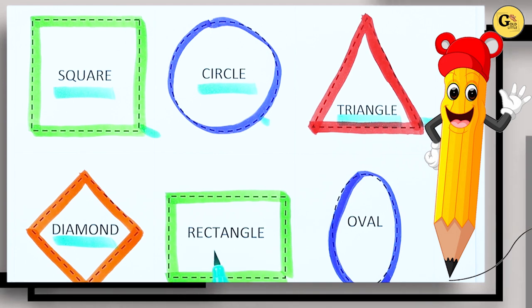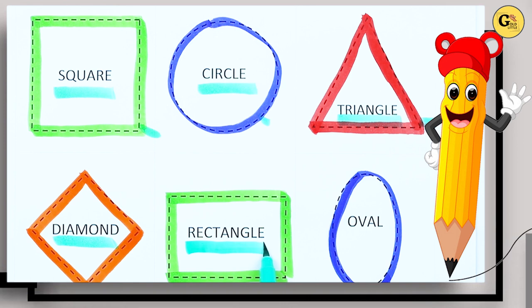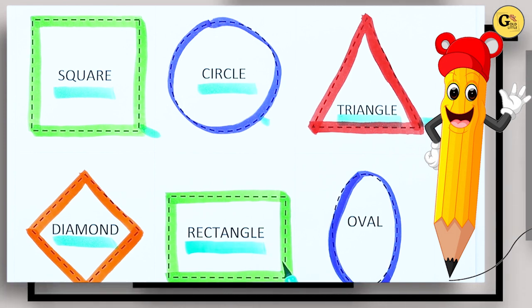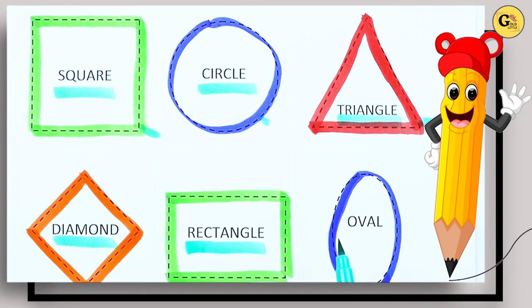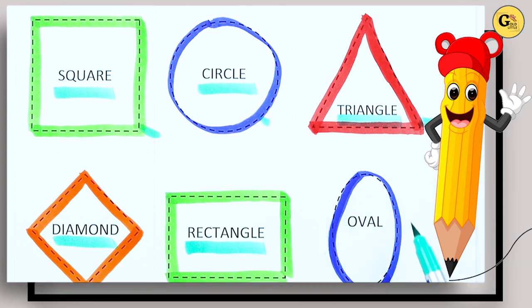Which shape is this? Rectangle. R-E-C-T-A-N-G-L-E. It's a rectangle with green color. Which shape is this?